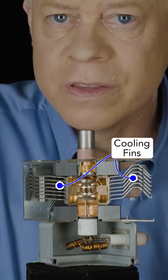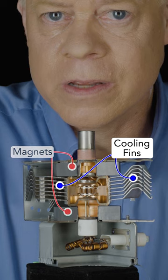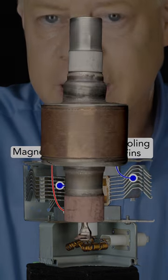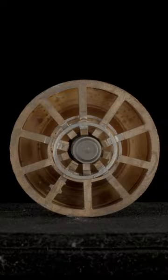Encased by cooling fins is a device called a magnetron, encircled by a magnet above and below. Inside this magnetron is a chamber with cavities.